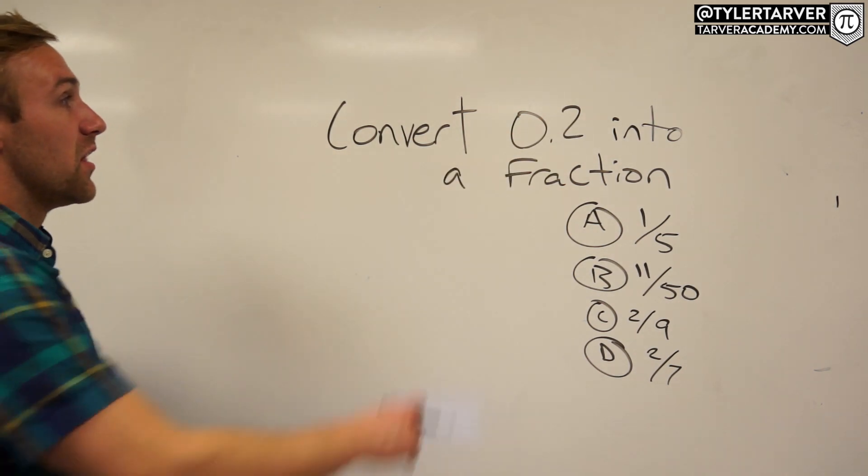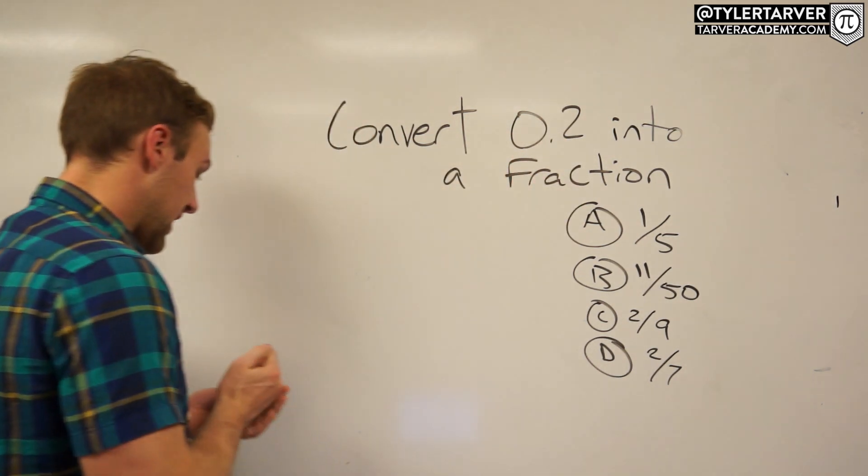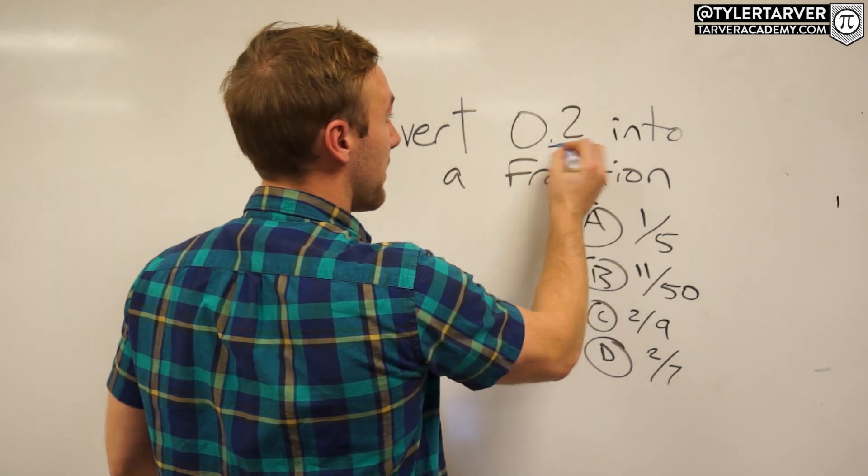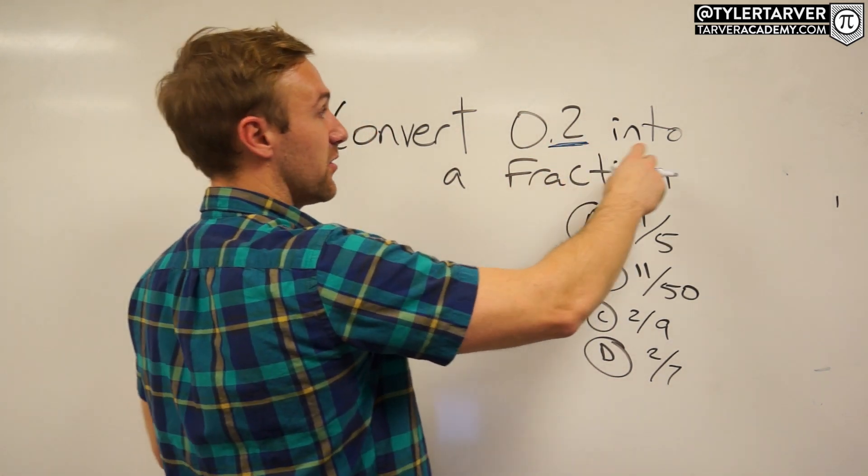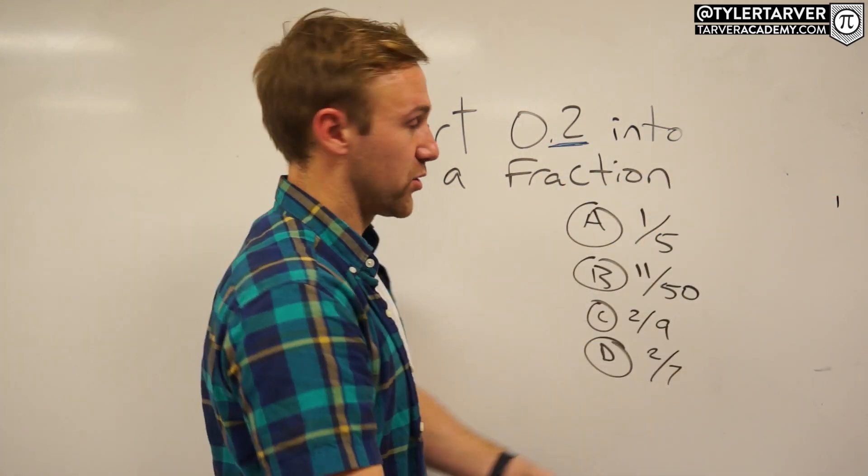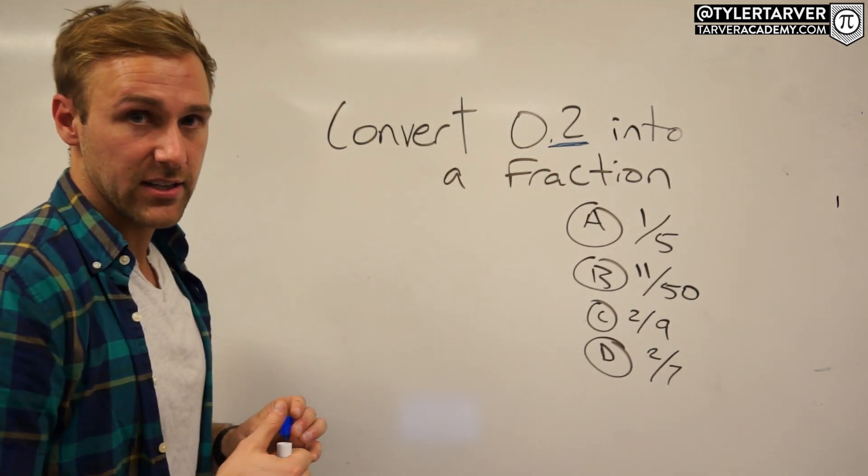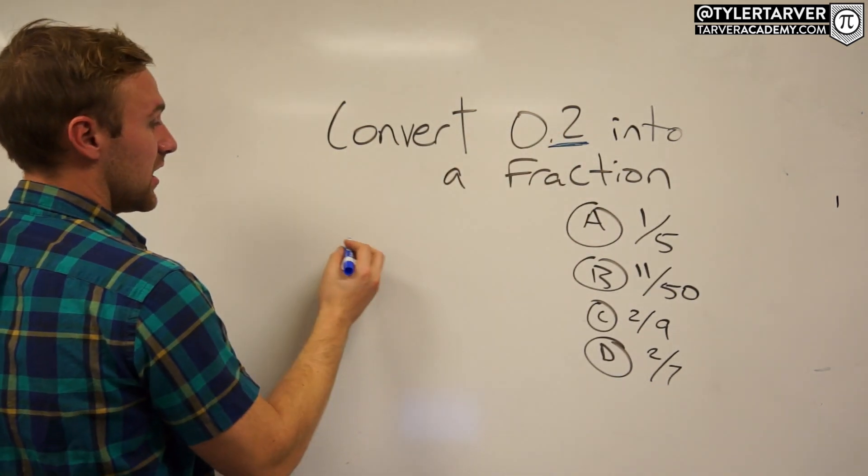Let's look into this. This two right now is in the tenth spot. That means it's one spot past the decimal - you got tenths, hundredths, thousandths, etc. We're in the tenth spot, so I can take that and put it over 10, which would be 2 over 10.